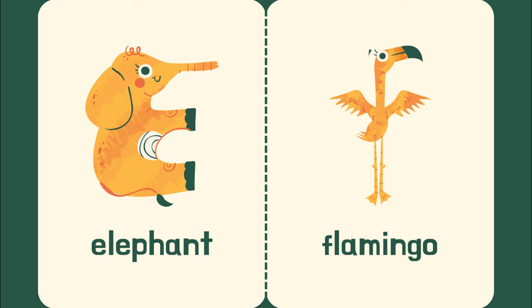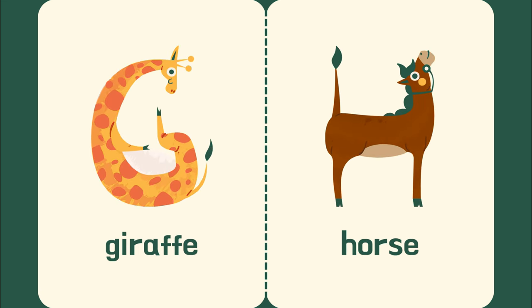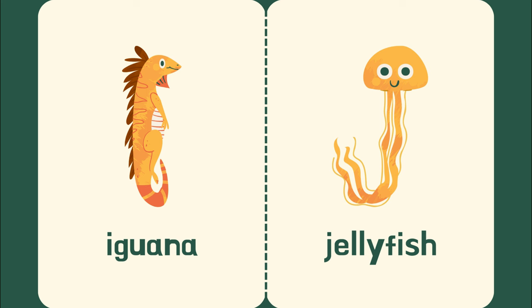F is for flamingo. G is for giraffe. H is for horse. I is for iguana. J is for jellyfish.